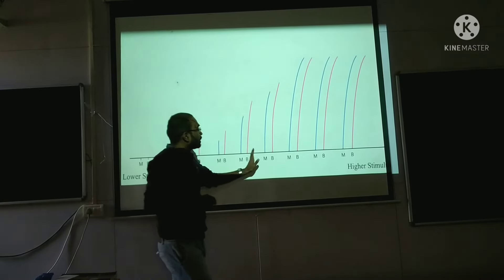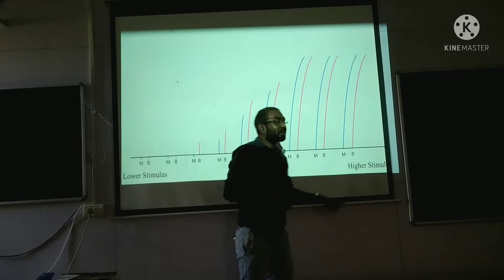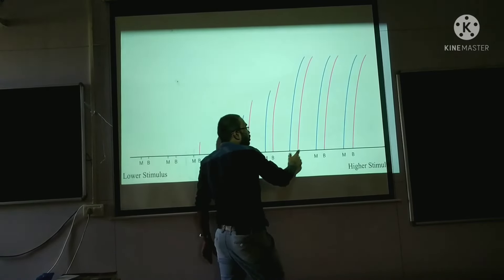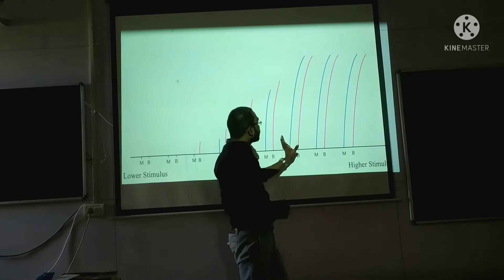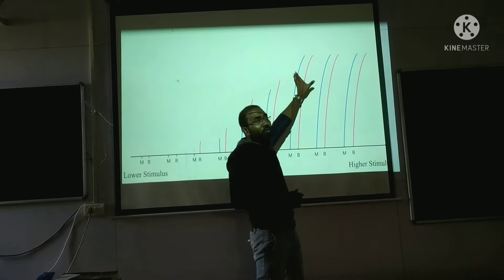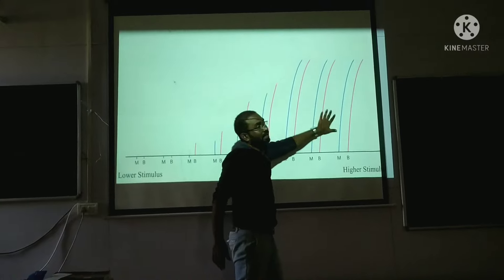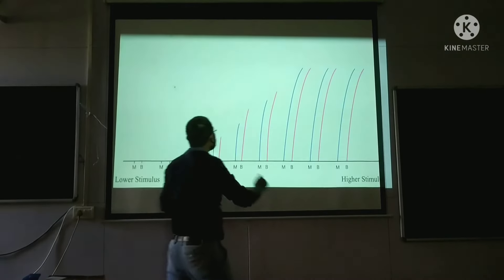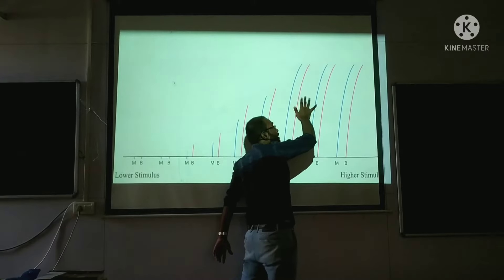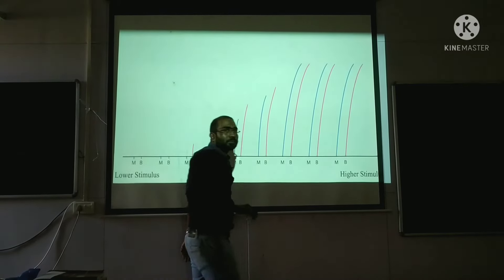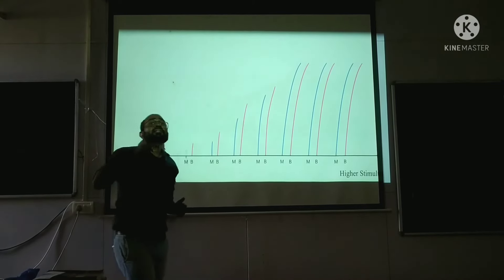At the higher stimulus level, when you observe the make and break, they are the same. The amplitude of contraction, the height of contraction, is the same. After reaching a certain point — the highest stimulus — the contraction does not go higher than a fixed level. We will be studying the reason for this.